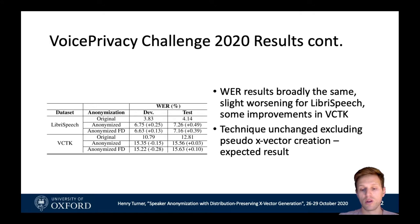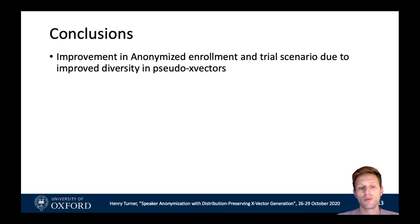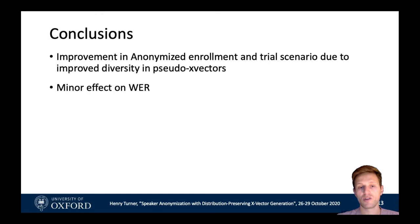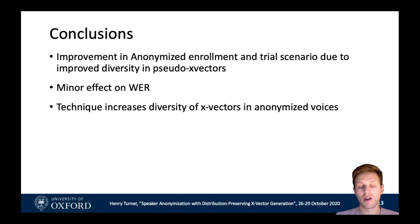To conclude, we noticed an improvement when comparing anonymized enrollment utterances against anonymized trial utterances, which we believe is due to the increased diversity created by our generator of pseudo x-vectors. This is what our system set out to do — by using the generator we reduce any dependence between the original x-vector and the new pseudo x-vector. This improvement came at the expense of a minor degradation in word error rate, which we think is fairly small and may not be noticeable in practice. Our technique greatly increases the diversity of x-vectors in anonymized voices, which increases the utility of the system particularly when applying anonymization to the same voice multiple times without intending to produce the same pseudo-anonymous speaker.